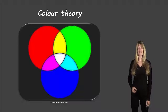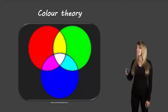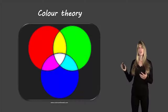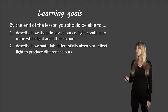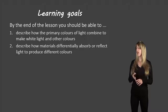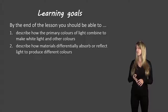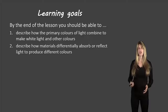Hello students, Ms. Swanson here, and today we're taking a look at color theory. This picture here shows the additive color theory — how different colors of light can mix together to produce other colors of light. We have a couple of learning goals today: you should be able to describe how the primary colors of light combine to make white light and other colors, and how materials differentially absorb or reflect light to produce different colors.